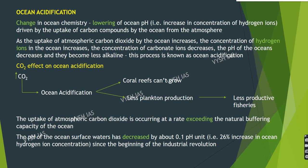pH ranges from 0 to 14. pH less than 7 is acidic, while pH greater than 7 is alkaline or basic, with 7 being neutral. As the uptake of atmospheric carbon dioxide by the ocean increases, the concentration of hydrogen ions increases, the concentration of carbonate ions decreases, and the pH of the oceans decreases — they become less alkaline. This entire process is known as ocean acidification.